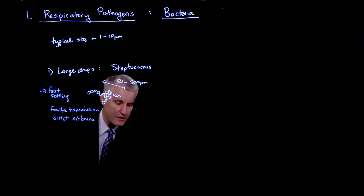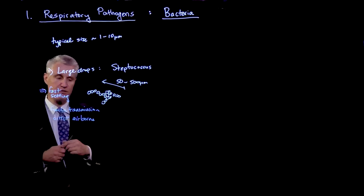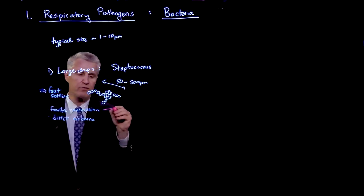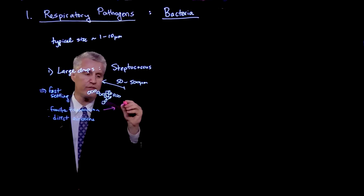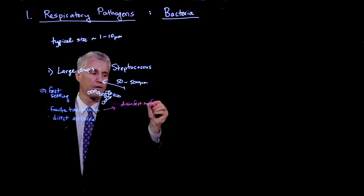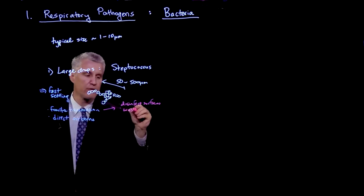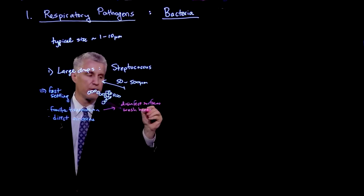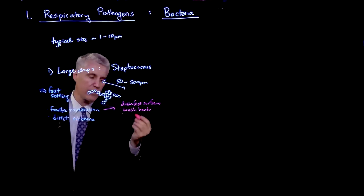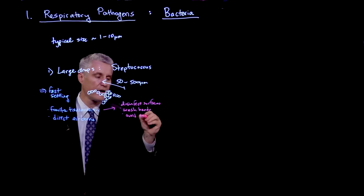And so what that means is that the way that we protect against bacterial transmission of disease is, for example, for the fomites, we will disinfect surfaces. We can wash hands, of course, and we will avoid touching eyes or nose.